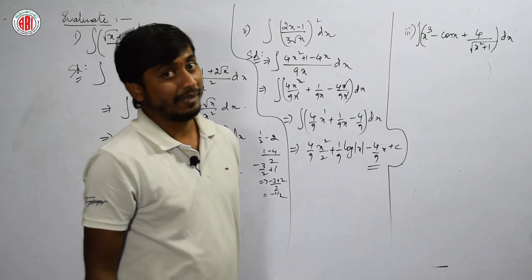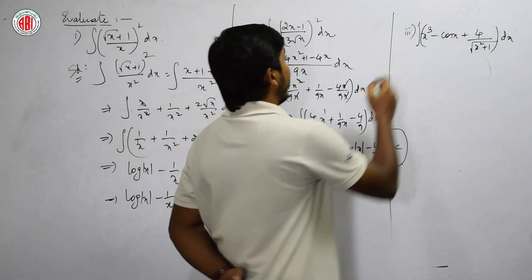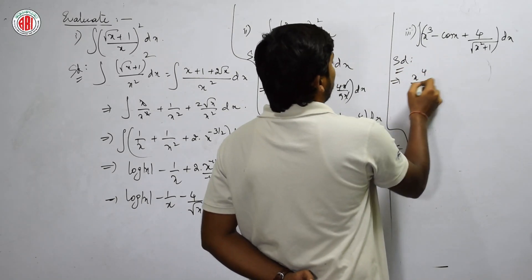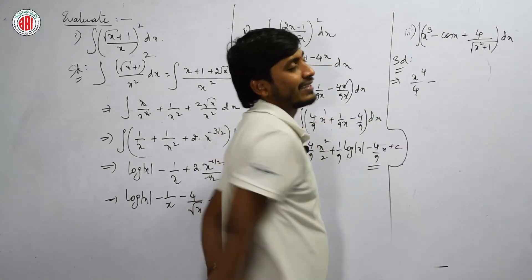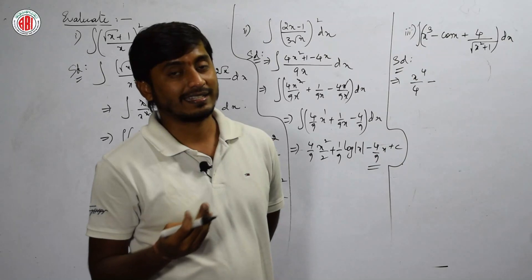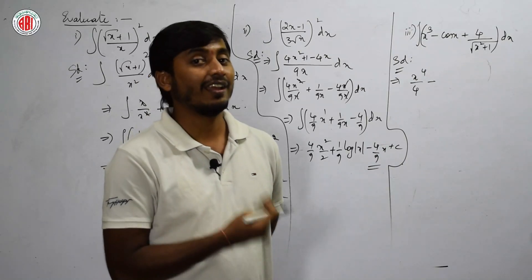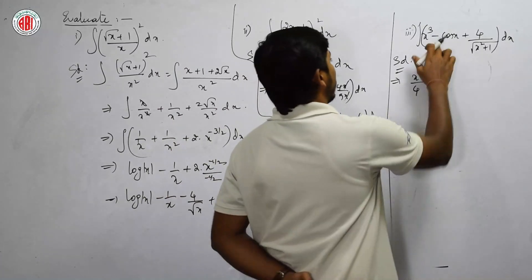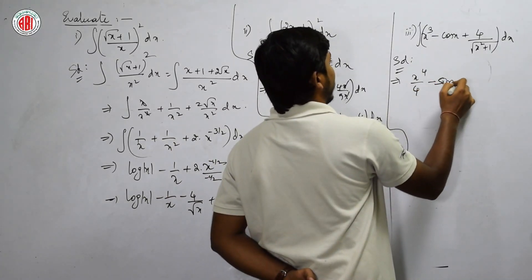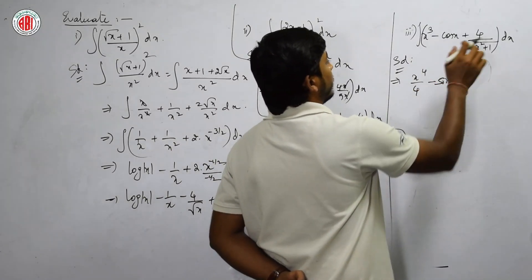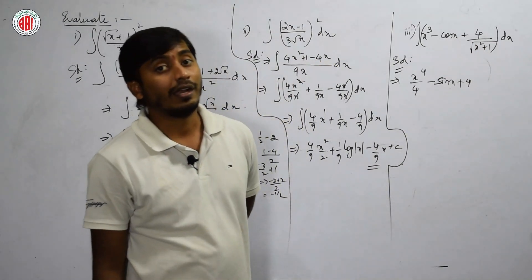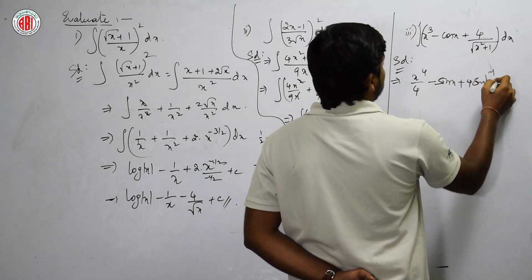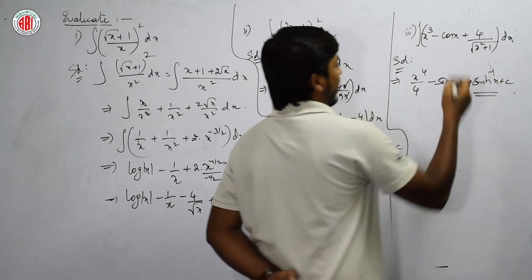Next: ∫(x³ - cos x + 2/√(1+x²)) dx. The integral of x³ is x⁴/4. The integral of cos x is sin x (since the derivative of -sin x is -cos x, integration of cos x is + sin x). The integral of 2/√(1+x²) is 2·sinh⁻¹x + c.